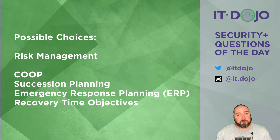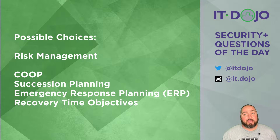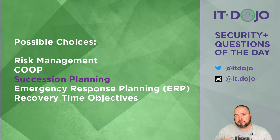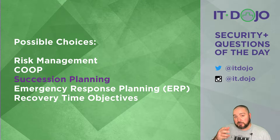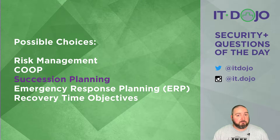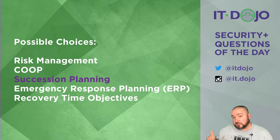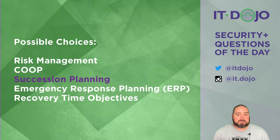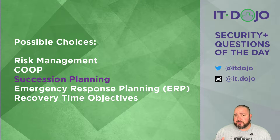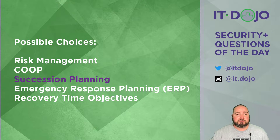Item number three: succession planning — absolutely, this is what we're looking for. As part of business continuity and disaster recovery plans, succession planning looks to groom, nurture, and develop from within the people in your organization who will be able to fill key roles as the people who currently hold them retire, quit, or otherwise leave. The whole idea is that it's easier to groom people from within and get them ready for the role so they can naturally progress into it.